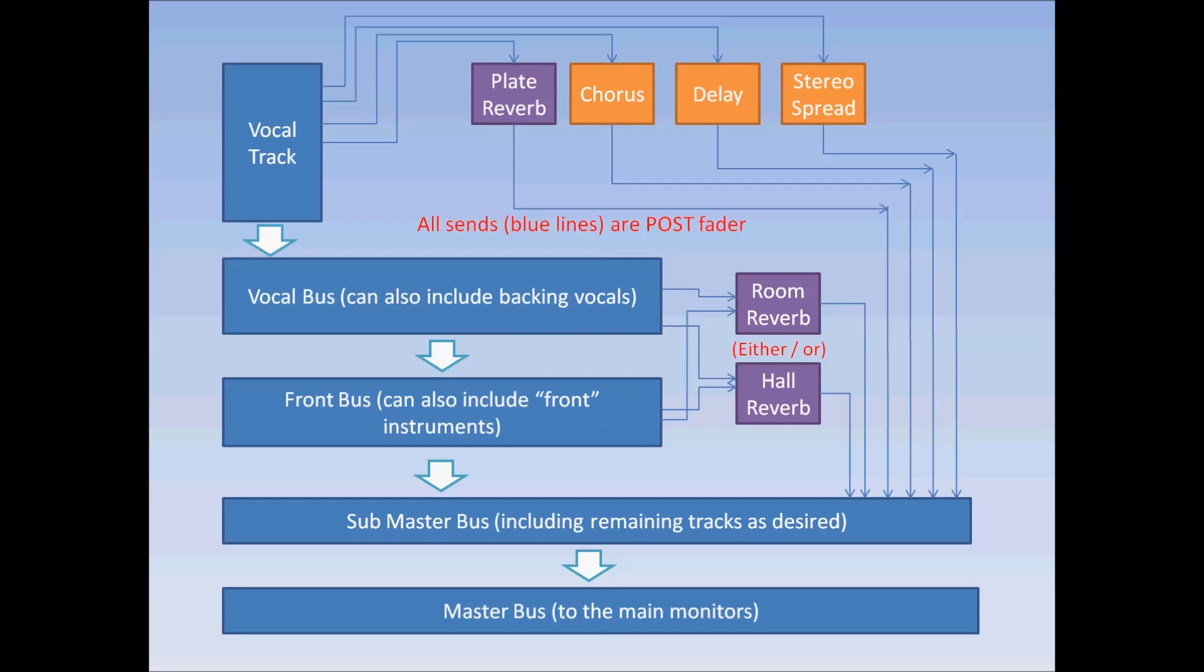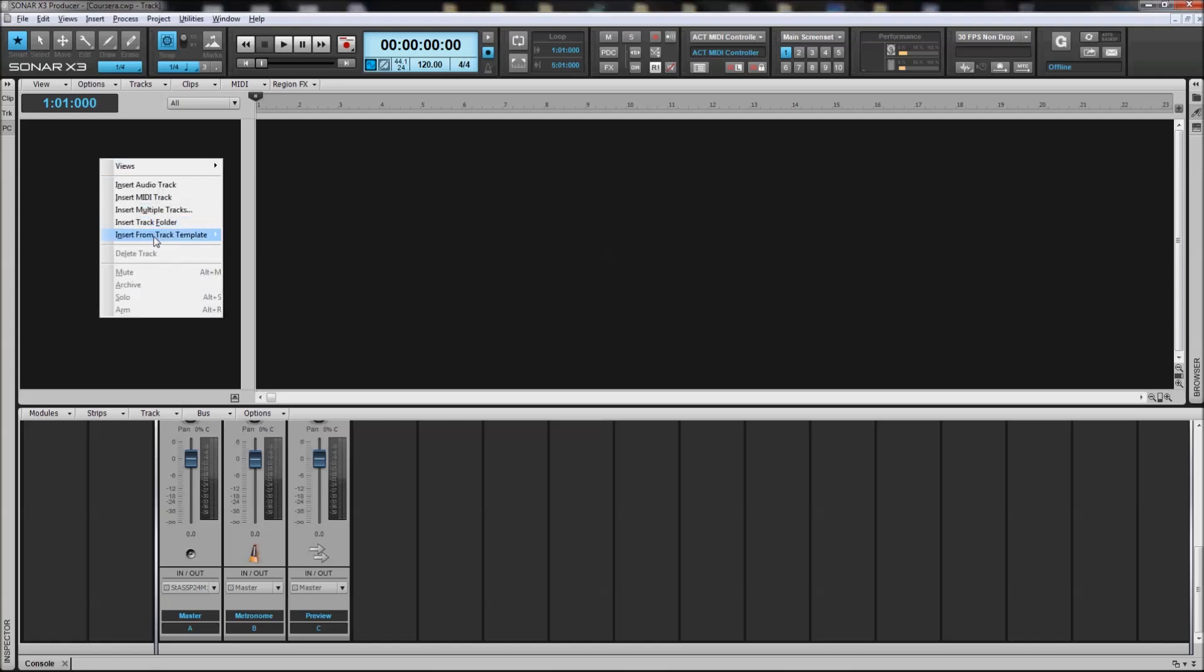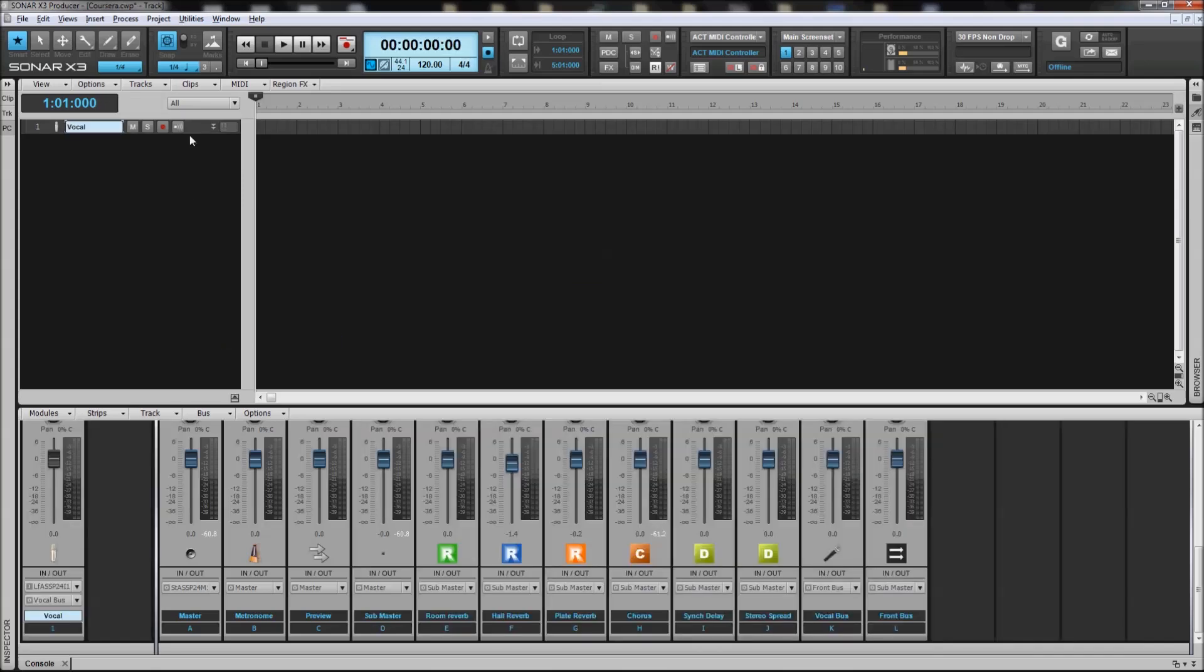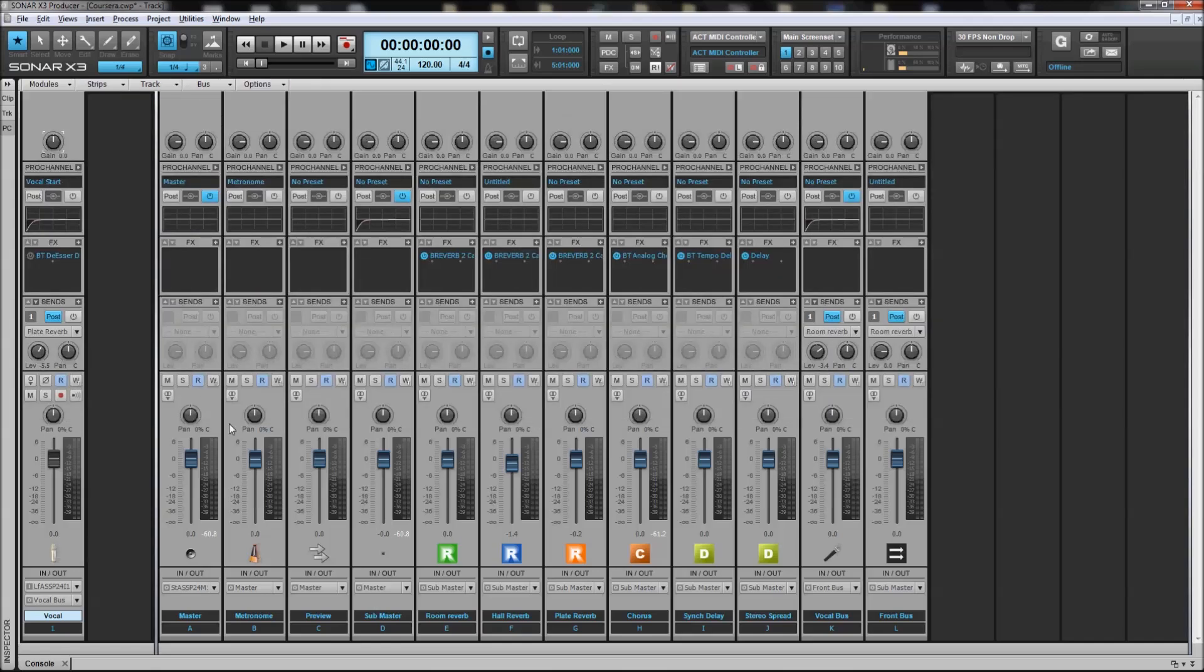So this is what I have, and I've actually gone ahead and set this up in Sonar X3. By saving it as a track template, it allows me to do this. In Sonar X3, if I go down, insert from the track template vocals from the Coursera presentation, you can see that what I have actually inserted is a vocal track, the four parallel sends that were discussed, and down here is the channel for that track and the associated buses, all of which were discussed in the PowerPoint presentation. What this has done for me is they're already routed, they already have the effects assigned, they're already preset to what I used last time I used them, and I'm ready to go.